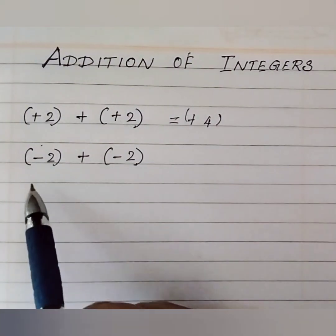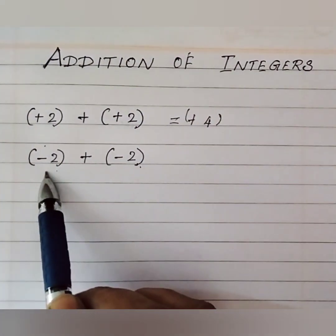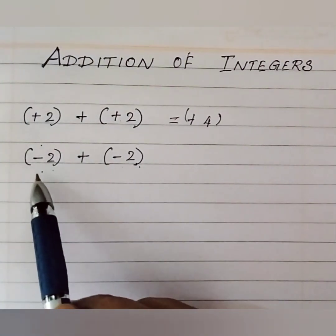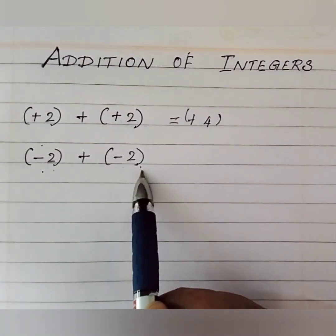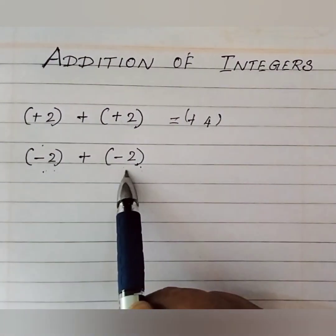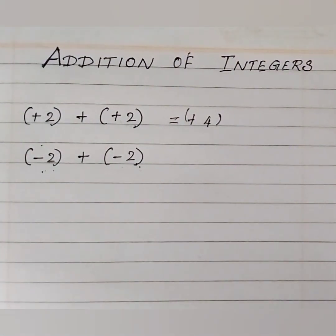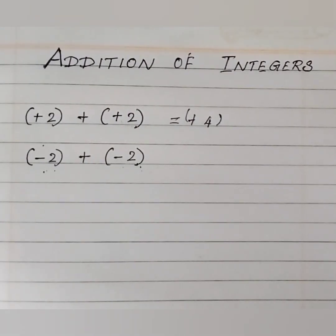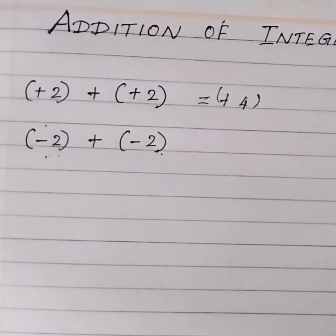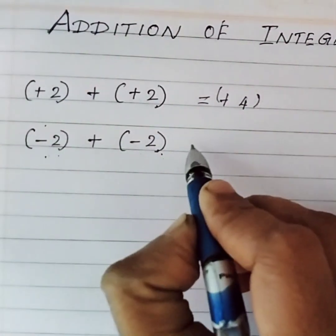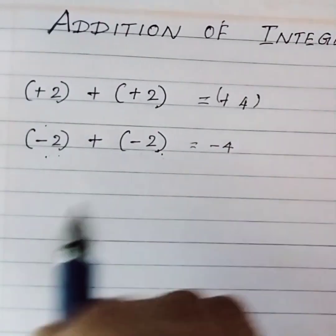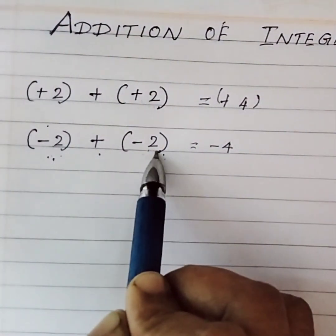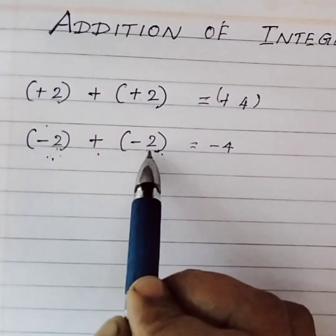Look at the second example: (-2) + (-2). Don't worry about the minus sign. Since we've already seen that when both signs are the same, we just add. What is 2 plus 2? It's 4. The answer is -4. Since both numbers have the same sign minus, we write -4.